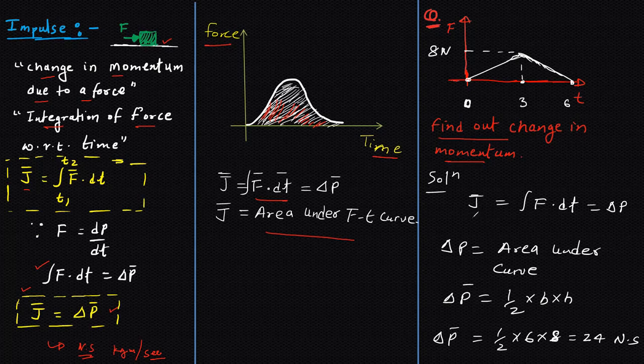Now we know that change in momentum is impulse and that equals F dt. F dt is area under curve, so that's why change in momentum is area under curve.